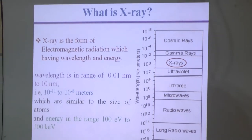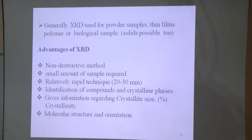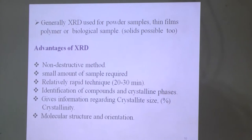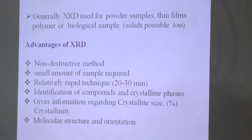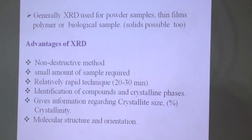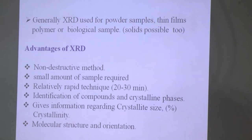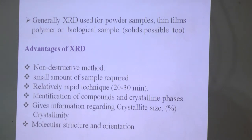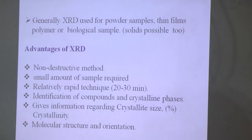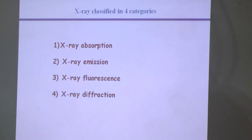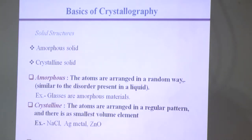X-rays are quite energetic, with energy in the range of 100 eV to 100 kV. Normally when we do XRD studies, we use powder samples. For nanoparticle determination you need powder form. If you have liquid-phase nanomaterials or dissolved nanomaterials, you need dynamic light scattering experiments instead. XRD is a non-destructive method — you can take your sample back and use it again. It is very rapid, requiring only half an hour, and gives crystalline size and crystallinity.